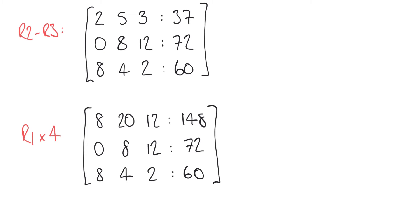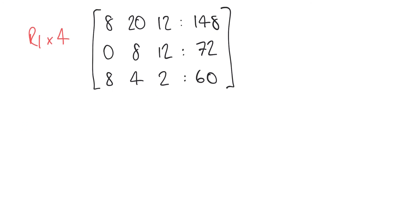Again, why am I doing this? Well hopefully you can see that the first terms now are both 8 in the first and third rows and so let's suppose we take the first row away from our third row here.